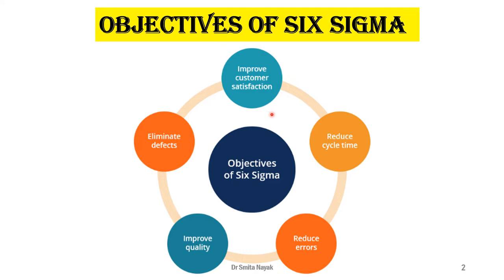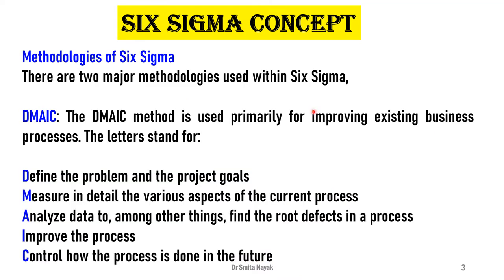The goal in any Six Sigma project is to identify and eliminate defects that are causing variations in quality by defining a sequence of steps around a certain target.